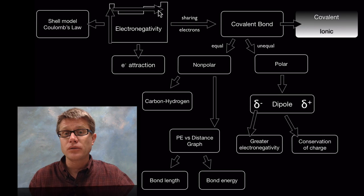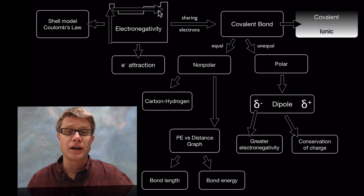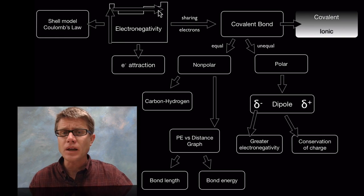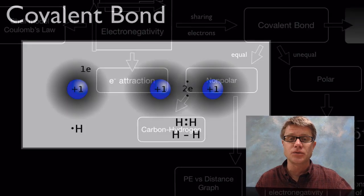Also as we move from covalent bond to more and more electronegativity we start to move into what are called ionic bonds. It's a gradient, it's a continuum. We can measure these to tell the difference between them.